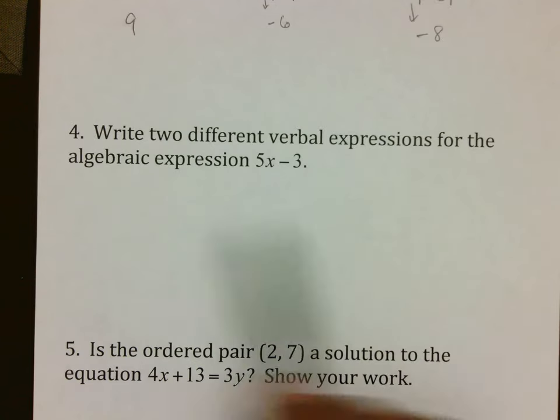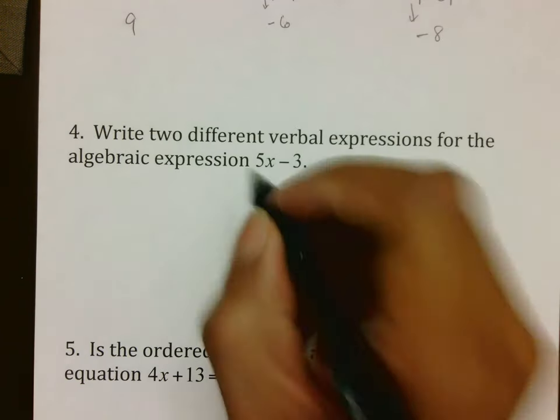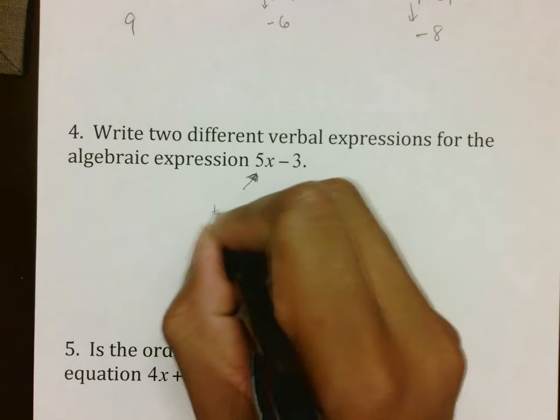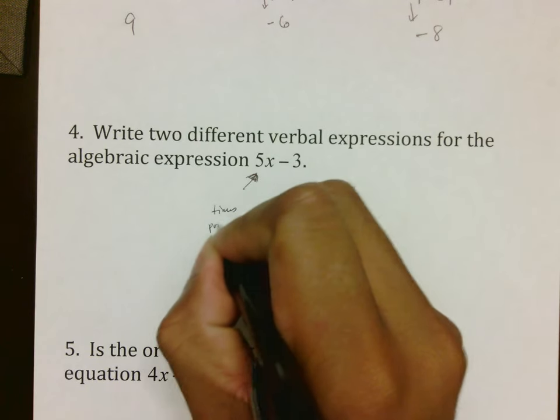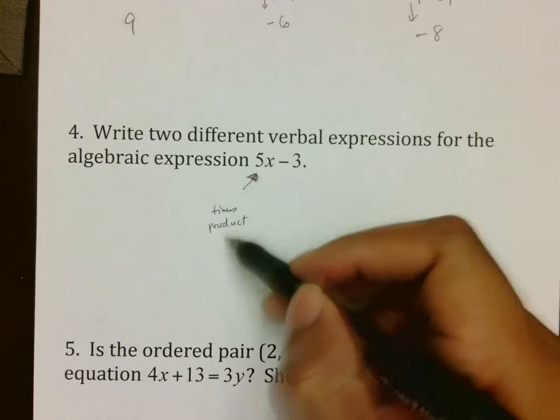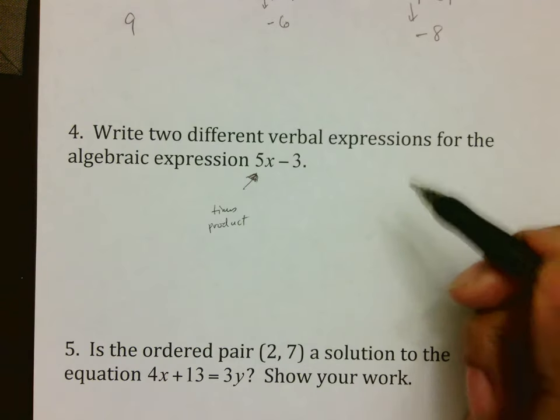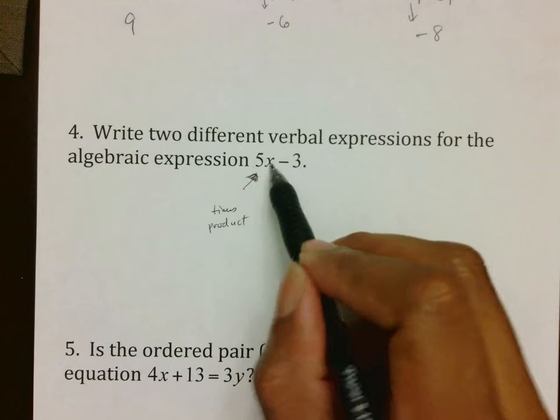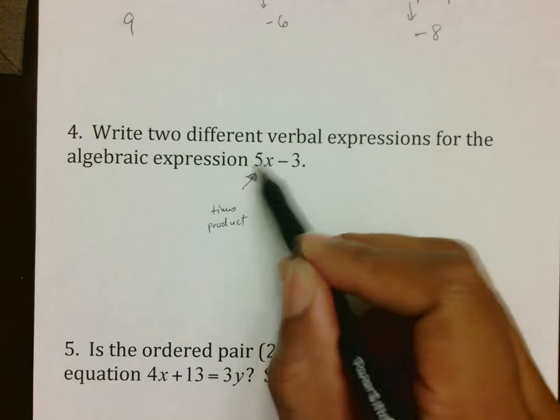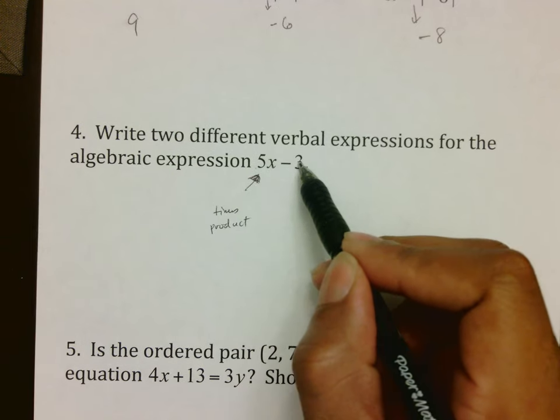In terms of number 4, two different verbal expressions for this. Just make sure you understand the wording of these things, that you can use times, that you can use product. And as long as you make one phrase that says times and the other one says product, you should be okay. For example, 5 times a number minus 3. Or you could say the product of 5 and a number minus 3.